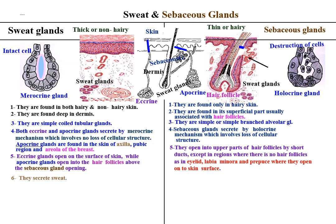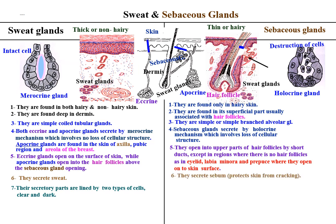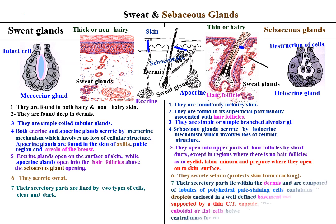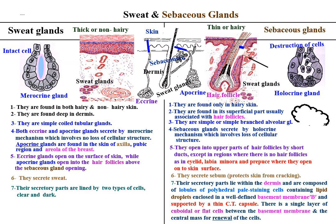The sweat glands secrete sweat; their secretory parts are lined by two types of cells: clear and dark cells. While sebaceous glands secrete sebum, which protects the skin from cracking; their secretory parts lie within the dermis and are composed of lobules of polyhedral pale-staining cells containing lipid droplets, enclosed in a well-defined basement membrane and supported by a thin connective tissue capsule. There is a single layer of cuboidal or flat cells between the basement membrane and the central mass for renewal of the cells.